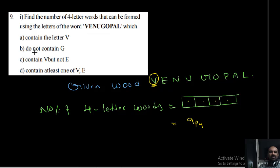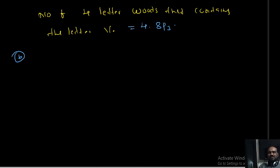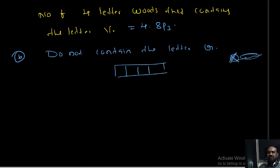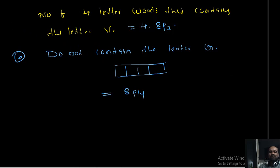Next, part (b): do not contain G. Easy — just remove G from the nine letters; remaining eight letters should be filled into four blanks, which is 8P4 ways. Therefore 8P4 four-letter words can be constructed such that none of them contains the letter G.